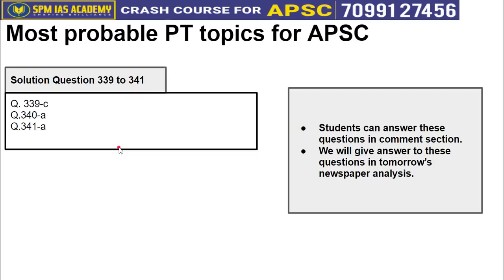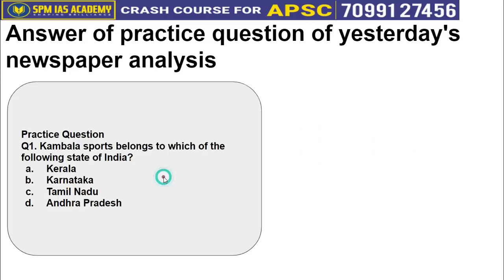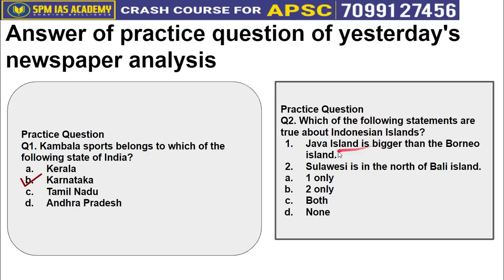This is the answer to questions 339 to 341 from yesterday's newspaper analysis. Today's questions can be attempted and submitted in the comment section — answers will be provided in tomorrow's analysis. The answer to the Kambala question: it is a sport belonging to Karnataka. For the Indonesian island question: Jawa island is bigger than Borneo island is false, but Sulawesi is north of Bali island is correct — so the correct answer is option B, statement 2 only. That's all for today, thanks for watching!